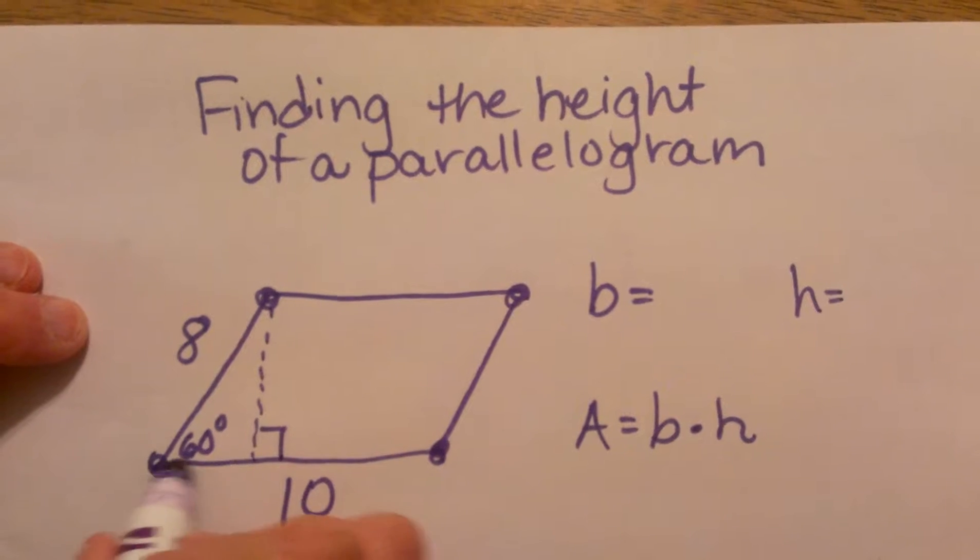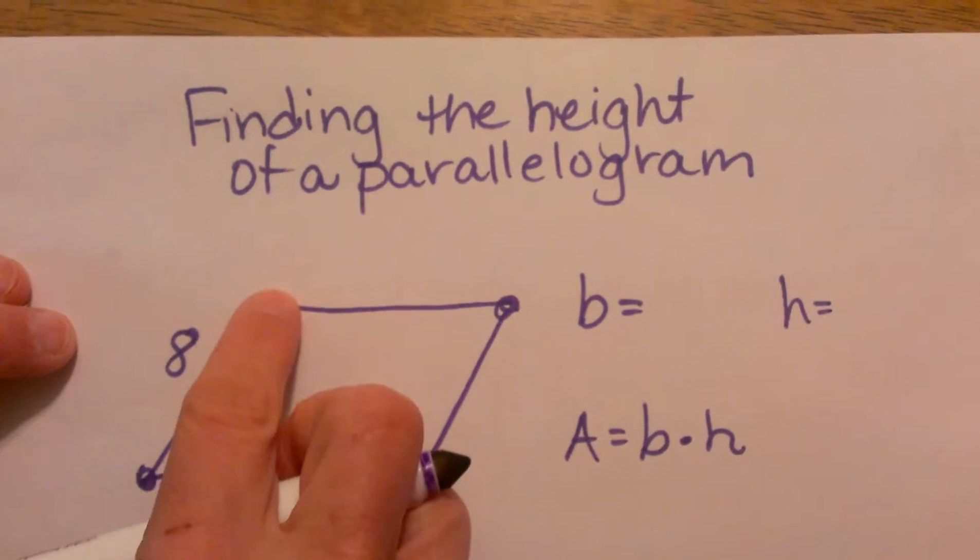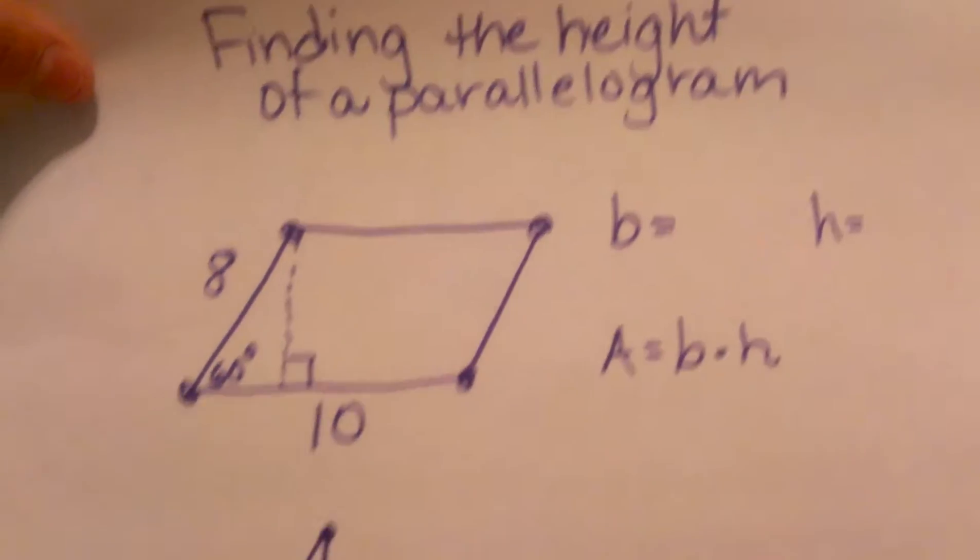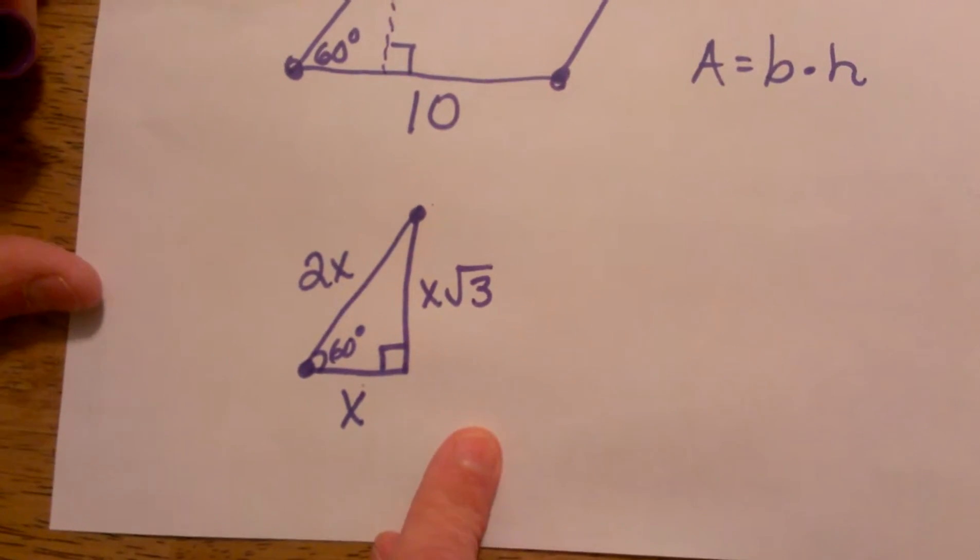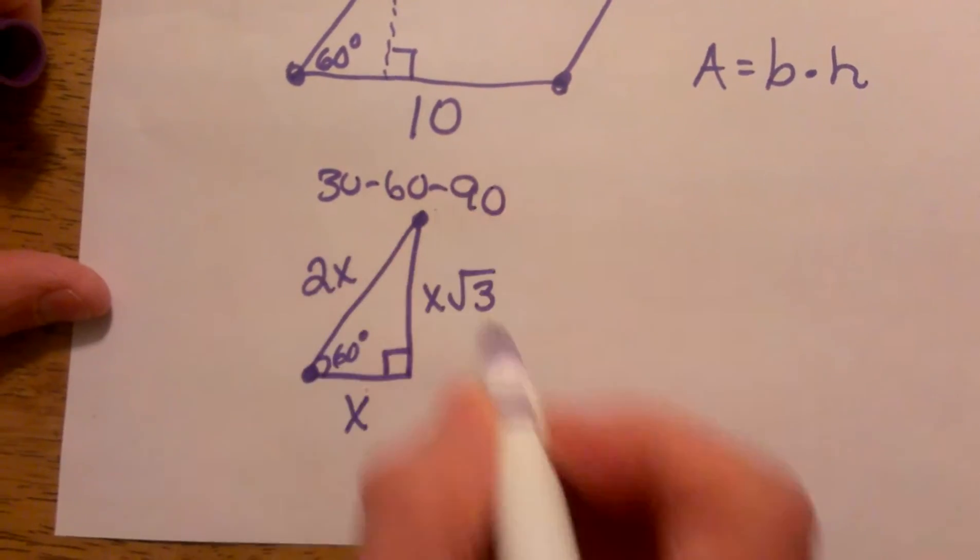When I draw that in, I've actually created a right triangle. This is a special right triangle and you see this a lot on the SAT. Let's review the rules for a 30-60-90 right triangle.